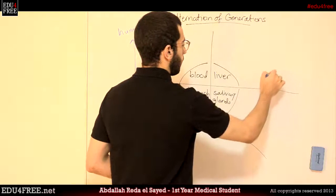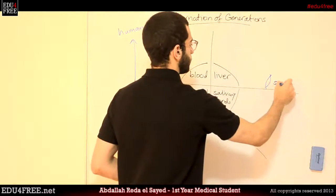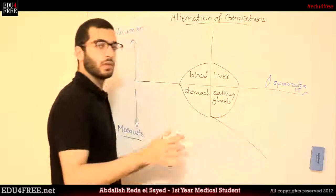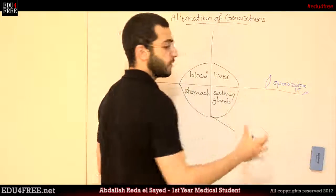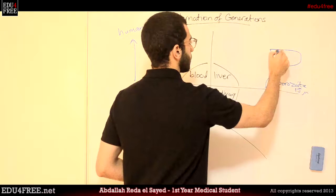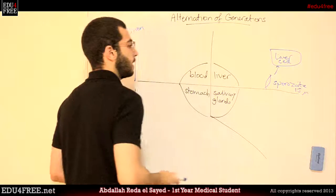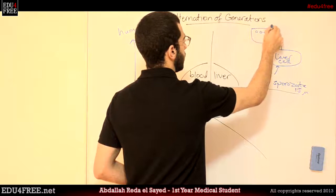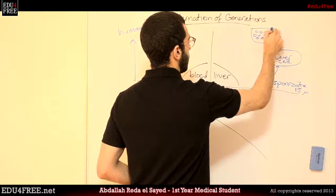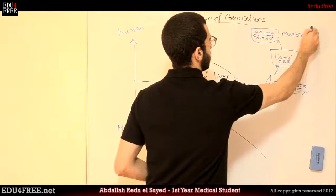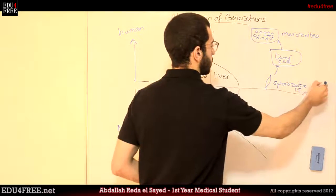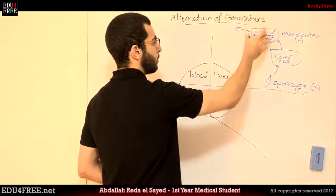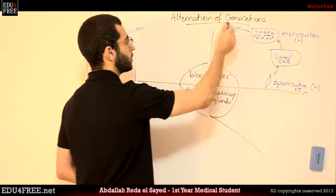It begins when an organism called the sporozoite, which is about 15 microns in length, migrates from the saliva of the mosquito to the blood of the patient until it reaches the liver cells. It attacks the cell and begins to reproduce inside it asexually, forming lots of tiny other organisms. These are called merozoites. The sporozoite has a chromosomal number of N, while the merozoites have 2N. When a large number of merozoites form inside the liver cell, it explodes and they get out.